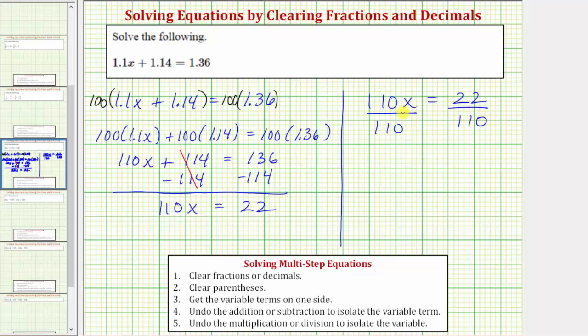On the left, dividing by 110 undoes multiplying by 110, or 110 divided by 110 equals one, and one times x is x. So we have x equals 22 over 110.